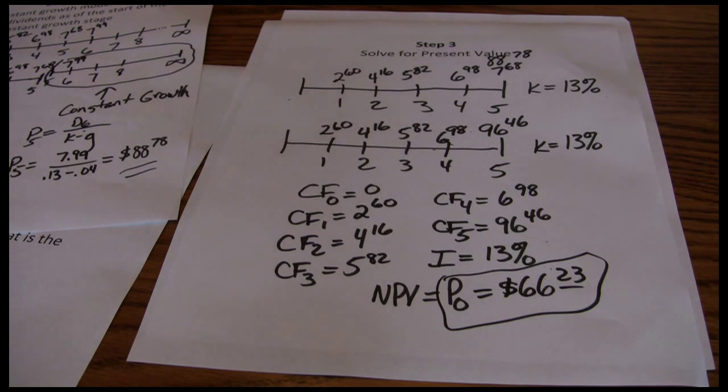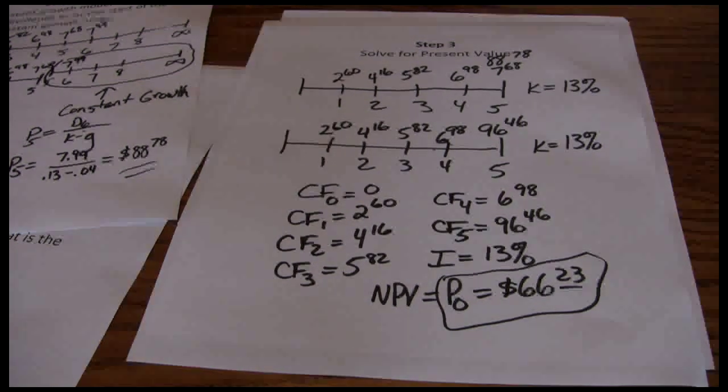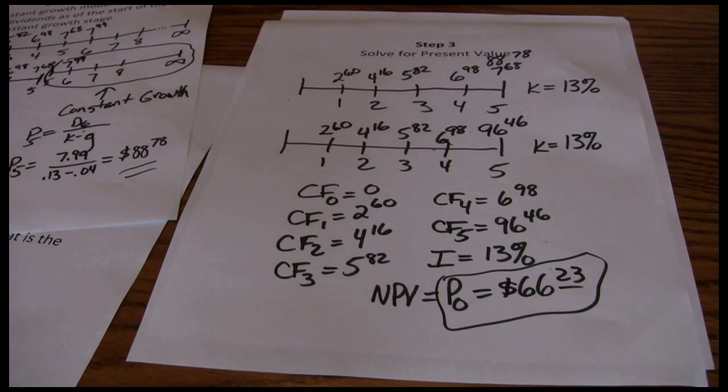One thing I want to add about the non-constant model—this same model is very often used in real-world stock valuation. The only difference is instead of dividends, a lot of professionals will use something called free cash flows, which measures how much cash the company is bringing in as opposed to just the dividends they're paying out to stockholders. That allows this model to be extended to companies that have very low dividend payout ratios or don't pay dividends at all.